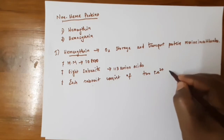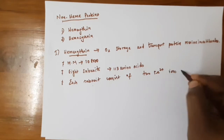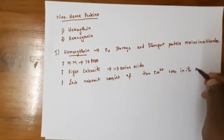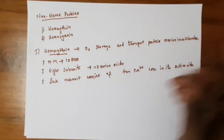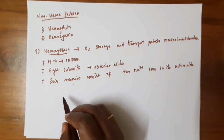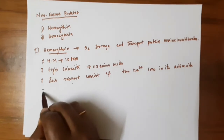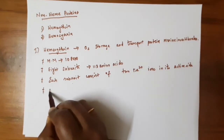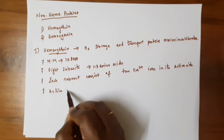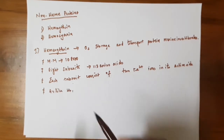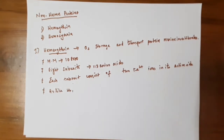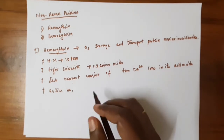Each subunit of hemerythrin has two Fe²⁺ ions in its active site. Like hemoglobin, hemerythrin contains subunits that are connected by polypeptide linkages.